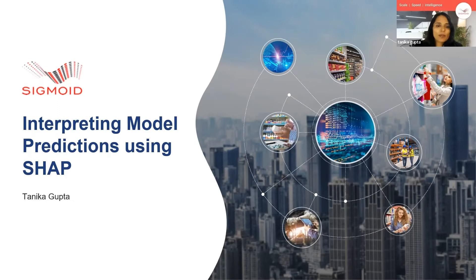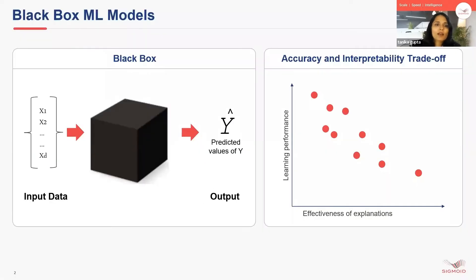The first question which would be coming to your mind is: why is interpreting model predictions very important? ML models are black box models, wherein we feed data and they give us a certain prediction, but we don't understand the underlying methodology. It becomes very difficult to trust a model. And as you can see, there is an accuracy and interpretability trade-off. The more accurate the model is, it becomes less interpretable because it becomes more complex. And the more interpretable the model is, it's less accurate.